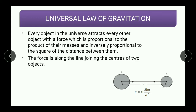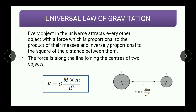The force is along the line joining the centers of the two objects. The formula for gravitational force is: F equals G (the Universal Gravitation Constant) multiplied by capital M multiplied by small m, divided by D squared. This is the formula for gravitational force. This was the Universal Law of Gravitation.